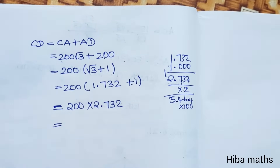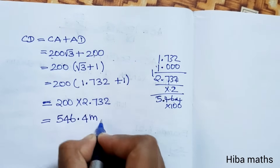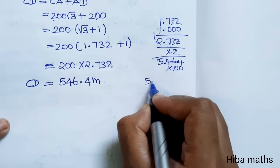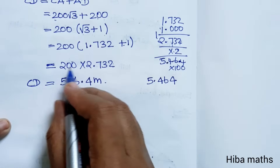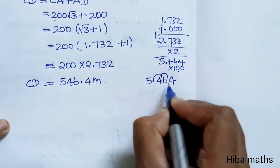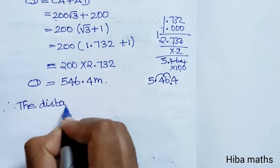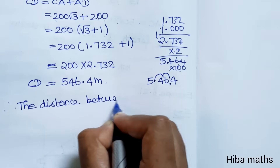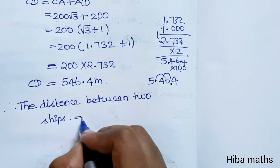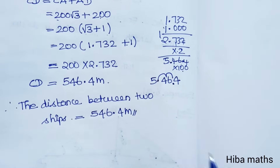The answer is 546.4 metres. The distance CD between the two ships is 546.4 metres. We multiply 200 by 2.732 to get 546.4. Therefore, the distance between the two ships is equal to 546.4 metres. Thank you so much for watching.